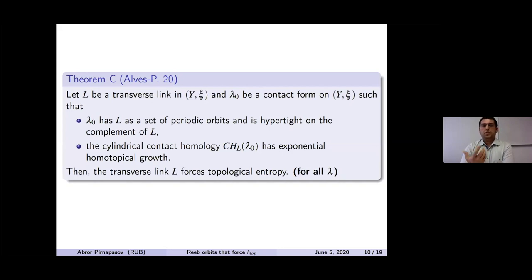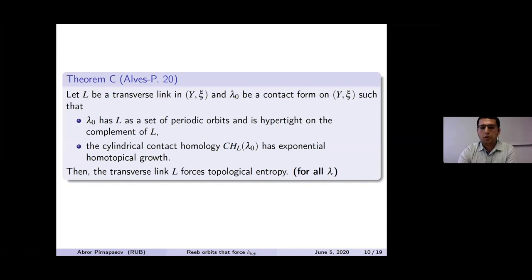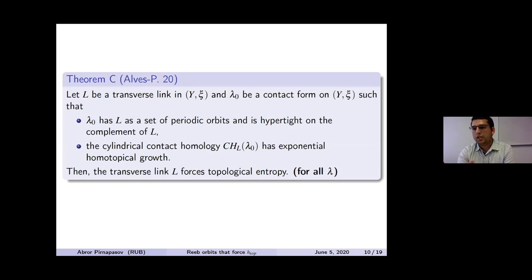Now we give the technical theorem used to prove the main result. If you have a transverse link L and a contact form λ₀ on a contact 3-manifold such that L is the set of periodic orbits of λ₀, and λ₀ is hypertight in the complement of L, and the cylindrical contact homology in the complement of the link has exponential homotopical growth, then the transverse link forces topological entropy — for all λ for which L is the set of periodic orbits.